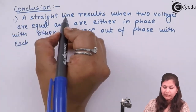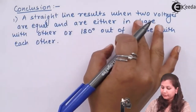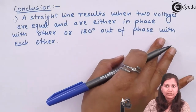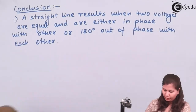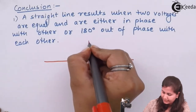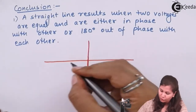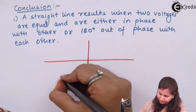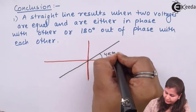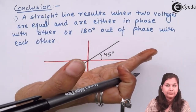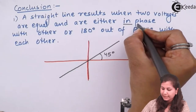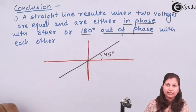When a straight line is obtained as a Lissajous pattern, the two voltages are equal, they have equal frequency, and they are either in phase with each other or 180 degrees out of phase with each other. On the CRO screen, this straight line makes an angle of 45 degrees with the horizontal. It can be tilted in either direction depending on whether the signals are in phase or 180 degrees out of phase with each other.